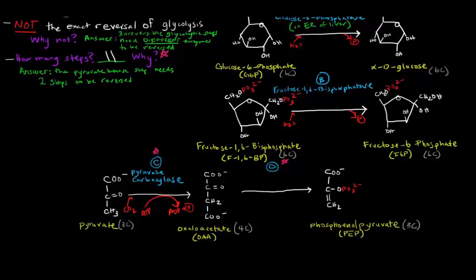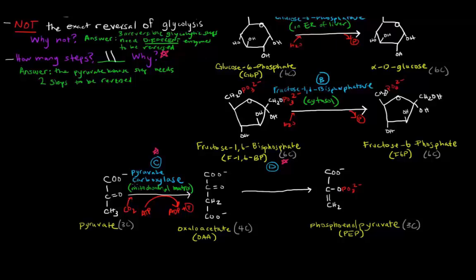One important thing to note: glucose-6-phosphatase is in the cytosol of cells, but pyruvate carboxylase — this reaction — occurs in the mitochondrial matrix. So pyruvate carboxylase occurs in the mitochondrial matrix, whereas the rest of the steps occur in the cytosol. We added a carboxyl group to pyruvate — hence pyruvate carboxylase — and this requires energy to convert pyruvate to oxaloacetate.